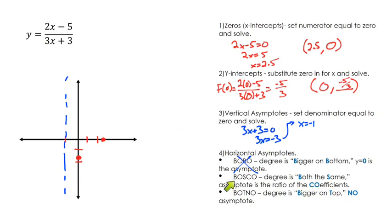In this case, we have the second category, Bosco, which is the degrees both are the same. We have a first degree and a first degree. They're the same, so the asymptote is the ratio of the coefficients, meaning this has a coefficient of 2, this has a coefficient of 3. So that would mean our asymptote is going to be y equals the ratio of those, two-thirds.